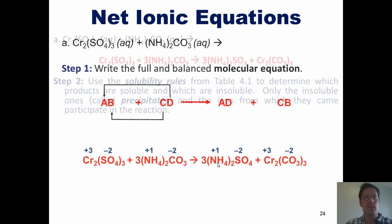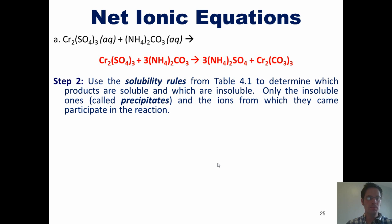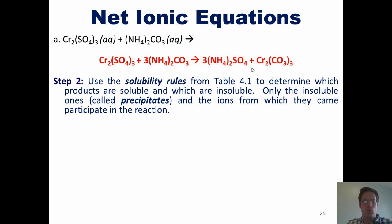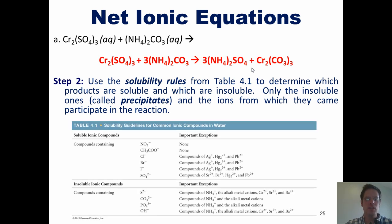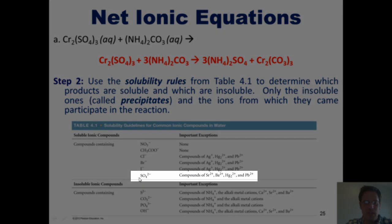Now that we've done step 1, we move on to step 2, which says we need to use the solubility rules to determine which of the products are soluble and which ones are insoluble in water. Let's look at ammonium sulfate. We go to the table and find sulfate, SO₄²⁻, in the upper half of the table.